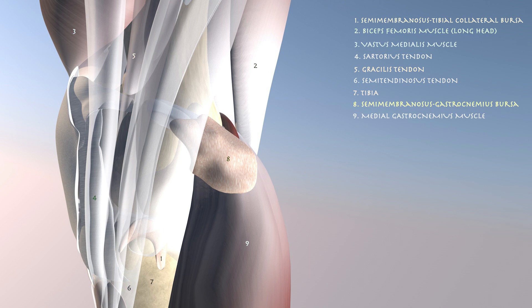Here we can see the semimembranosus tibial collateral ligament bursa that drapes over the distal semimembranosus tendon.